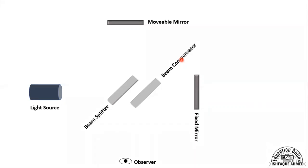When path difference is zero we get constructive interference, but the path difference can also produce destructive interference. One important point: if the fixed mirror and movable mirror are perpendicular to each other, the interference pattern corresponds to the Young's Double Slit experiment. If they are not exactly perpendicular, the pattern corresponds to wedge-type thin film interference, giving a series of alternating constructive and destructive fringes.